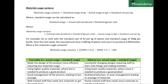The way the materials usage variance works is that you'll have your standard cost card and you'll expect to use a certain amount of materials for each unit produced. So maybe you're producing a bottle of water and you expect to use 300 grams of plastic to make that bottle based on the standard cost card. If you use 310 grams, that's bad — that's an adverse variance. If you use 290 grams, that's good — that's a favorable variance.